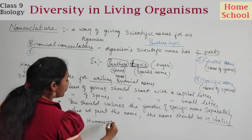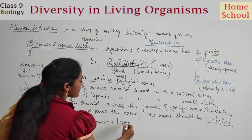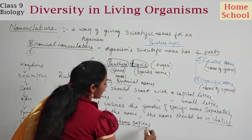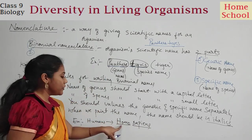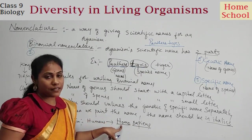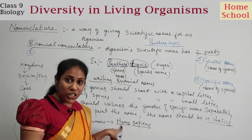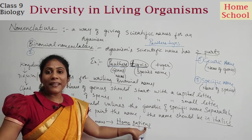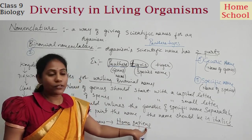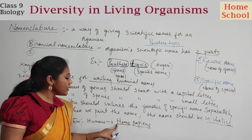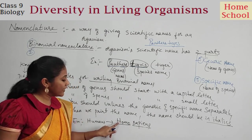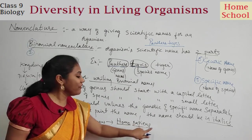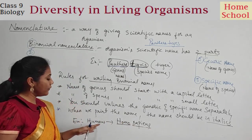Another example: the scientific name for humans is Homo sapiens. Homo is the genus name — human beings belong to the genus Homo. Sapiens is the species name. So Homo is the generic name, started with a capital letter and underlined, and sapiens is the specific name, started with a small letter and underlined.